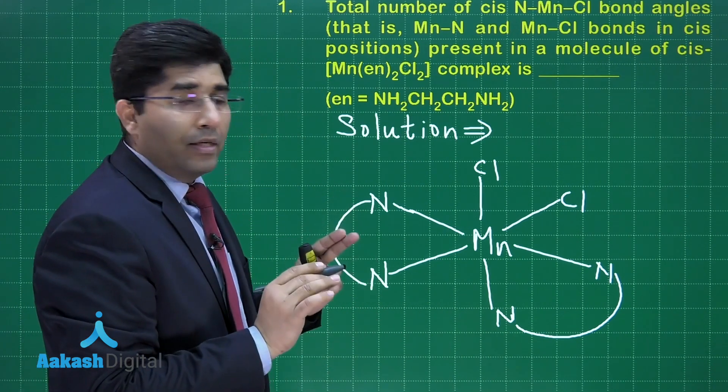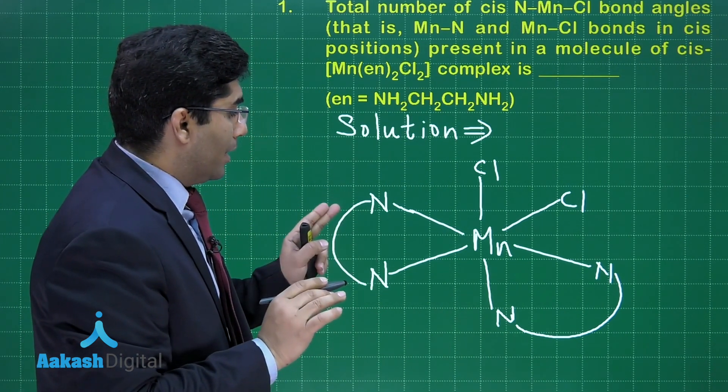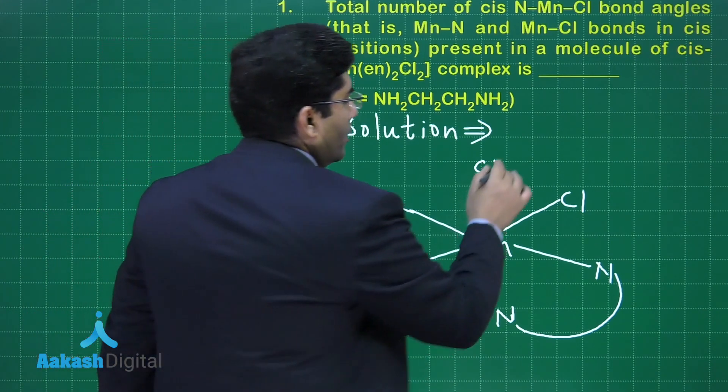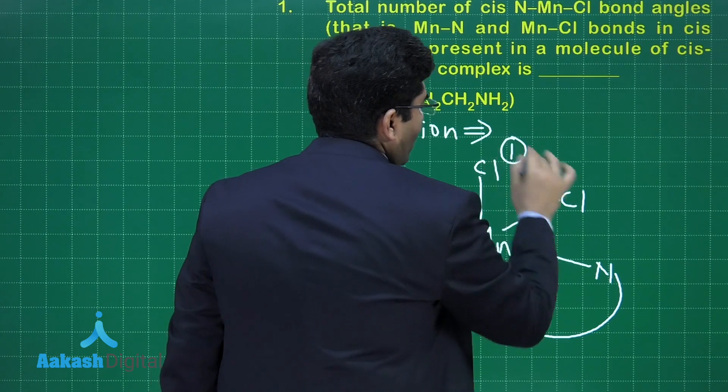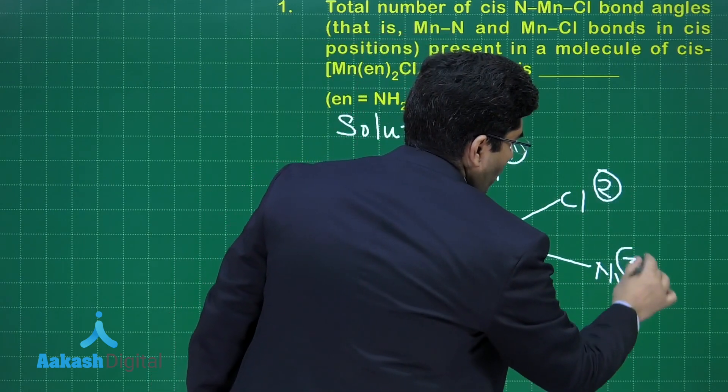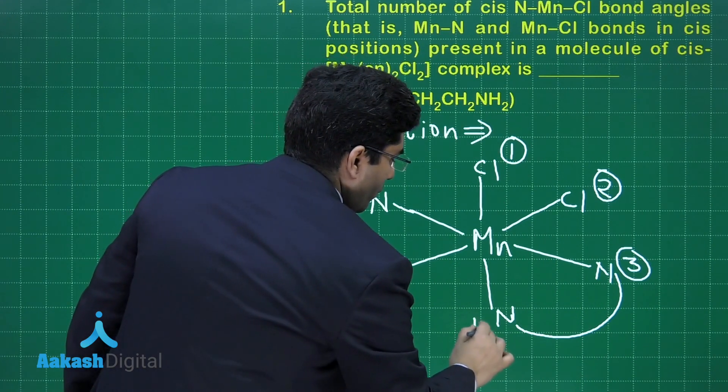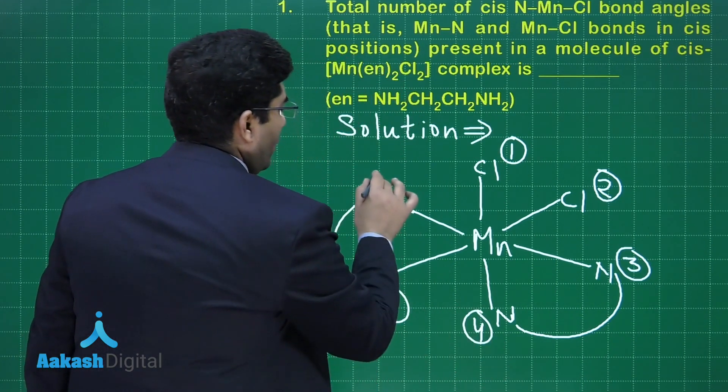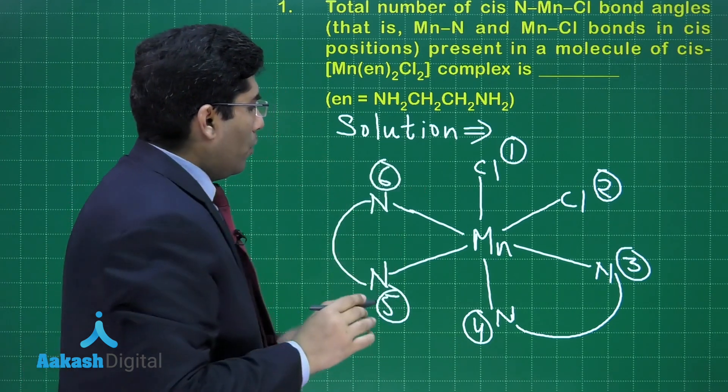Now, what we have to search? We have to search that angle should be 90 degrees. Let us count all the angles. Let us number the atoms. This is atom number 1, 2, 3, 4, 5, 6.